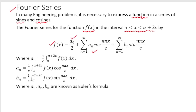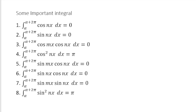We have three terms to calculate: a₀, aₙ, and bₙ — these are known as Fourier coefficients. To calculate a₀ we use (1/c)∫f(x)dx from α to α+2c. aₙ is calculated as (1/c)∫f(x)cos(nπx/c)dx, and bₙ uses (1/c)∫f(x)sin(nπx/c)dx. These formulas are known as Euler's formulas. I will solve problems to help you understand better.